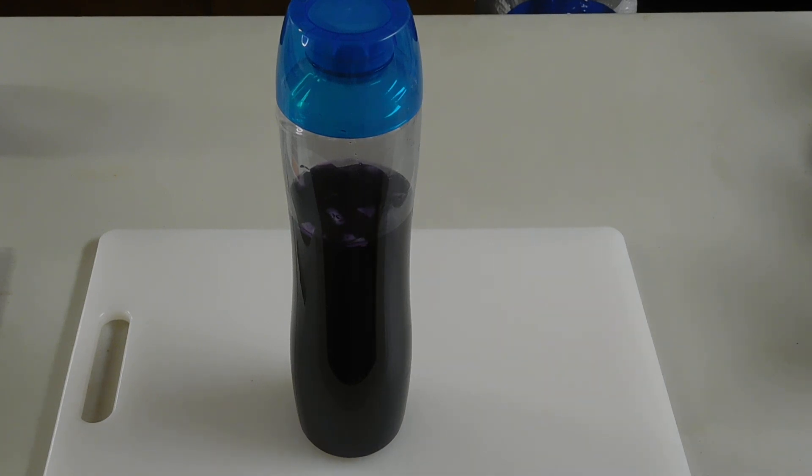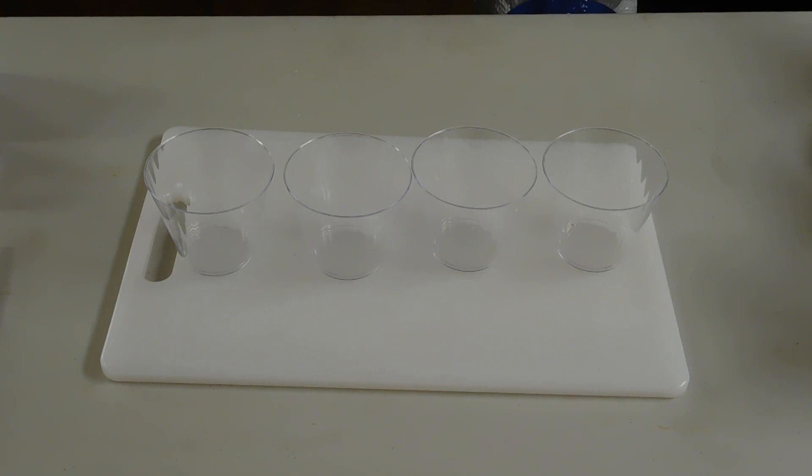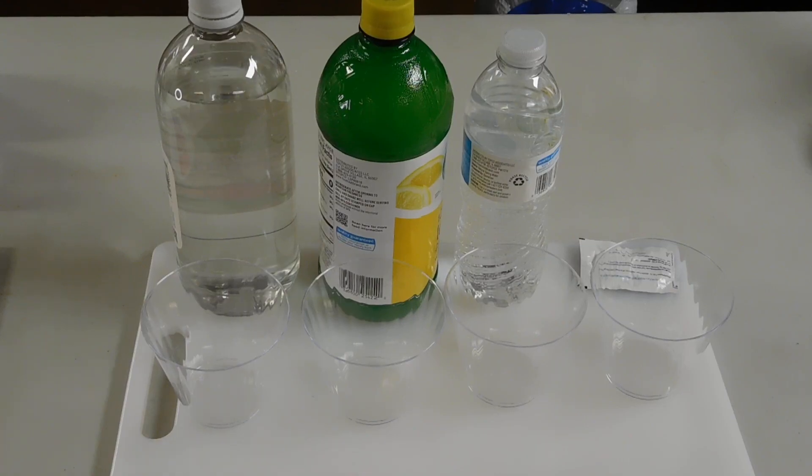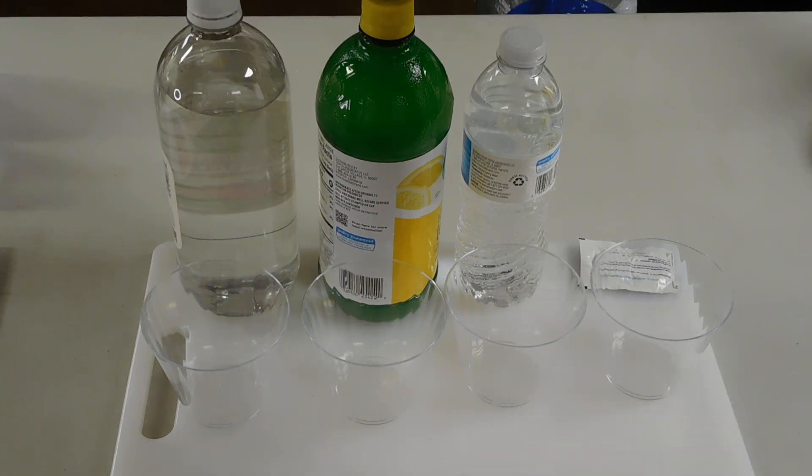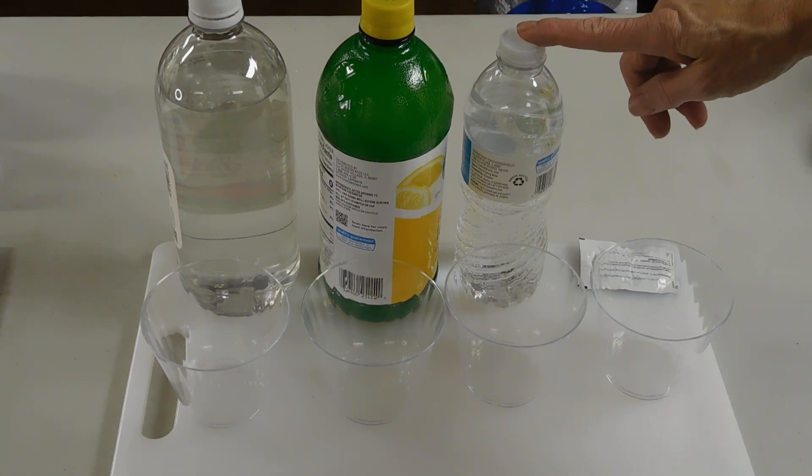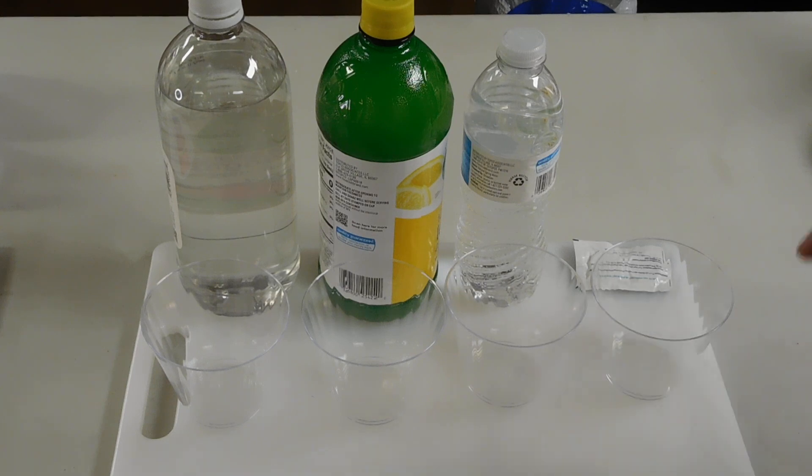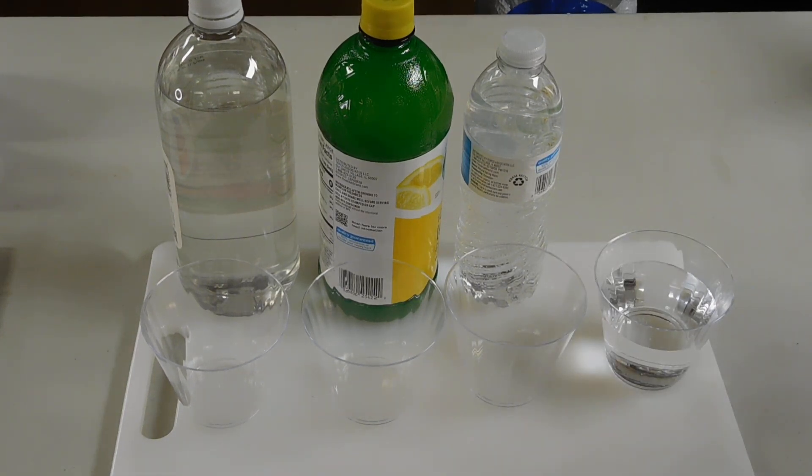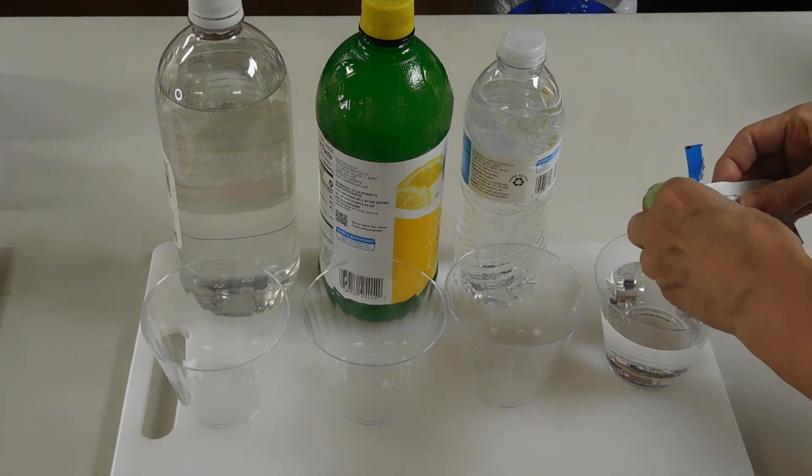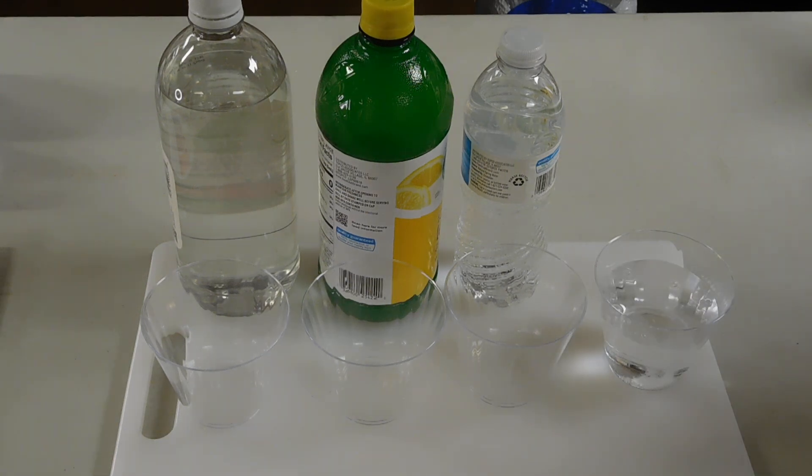So to do that, we'll need a couple things. We need the indicator solution, a couple eyedroppers, some plastic cups, and some substances to test. So I have vinegar, lemon juice, water that I've dissolved baking soda in, and some antacid. The first thing we're going to do is take some distilled water and make our antacid, because it's going to be easier to test the substance as a liquid instead of trying to test the solid.